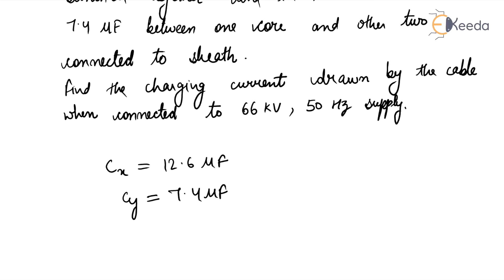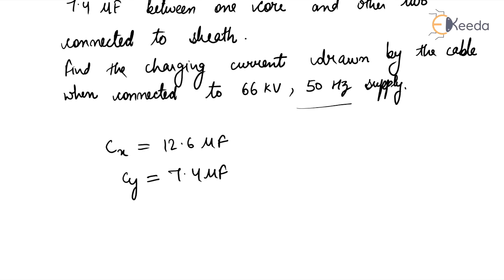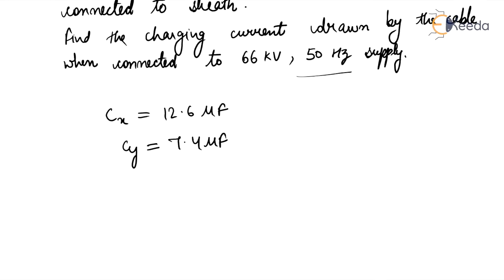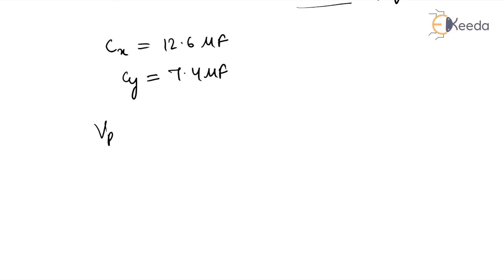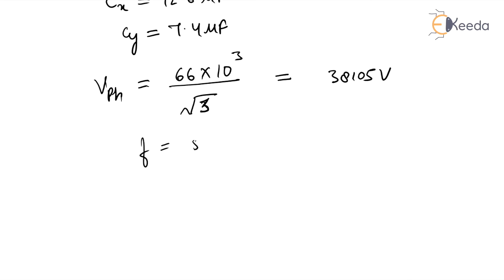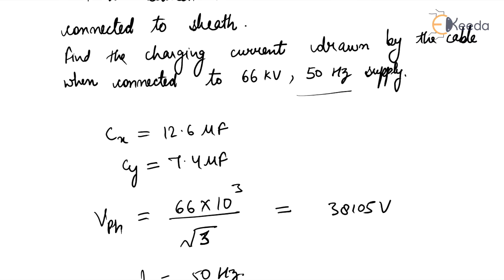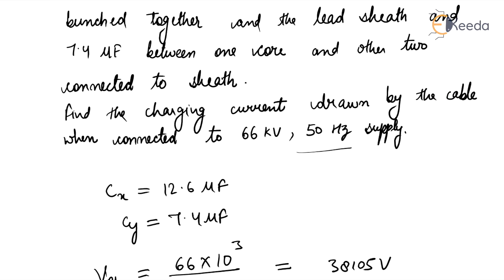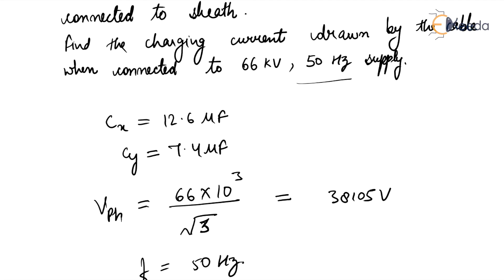We have to find the charging current drawn by the cable when connected to a 66 kV, 50 Hz supply. Phase voltage VPH equals VL divided by root 3, which is 66×10³ divided by root 3, giving us 38105 volts. Frequency F is given as 50 Hz.